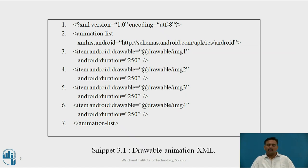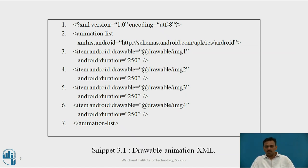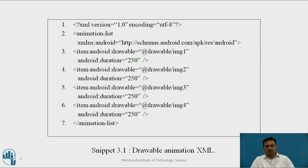This is the format of the drawable animation XML file. The XML file starts with the tag animation-list, which contains the list of images to be provided in the animation, and ends with the closing slash animation-list tag. Inside, the list items at line numbers 3, 4, 5, and 6 provide image1, image2, image3, and image4 in sequence. The android:duration attribute — set to 250 milliseconds — specifies how long each image is displayed. This is the basic format of the drawable animation XML.